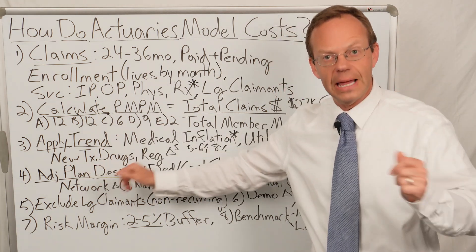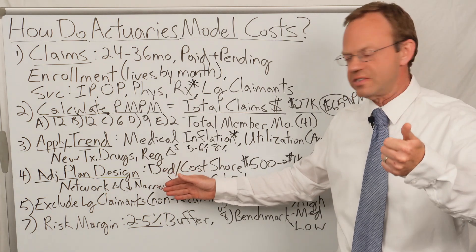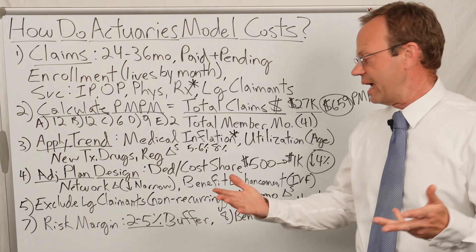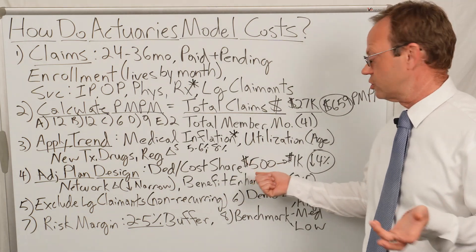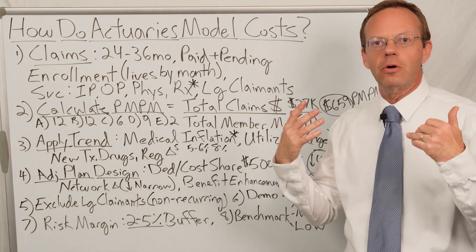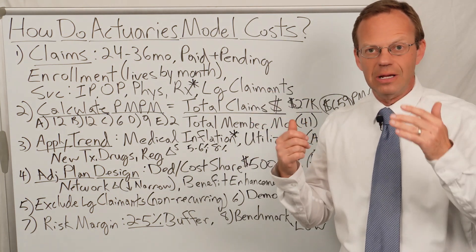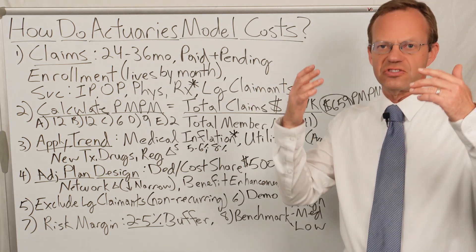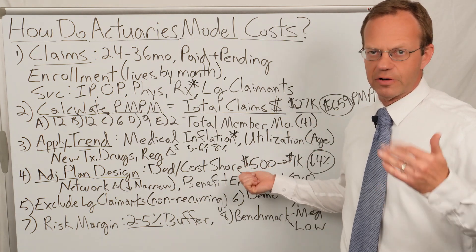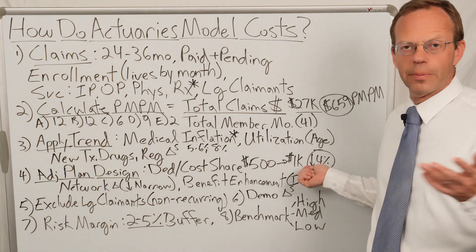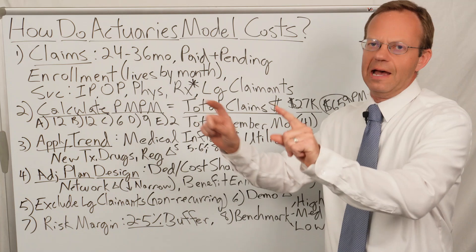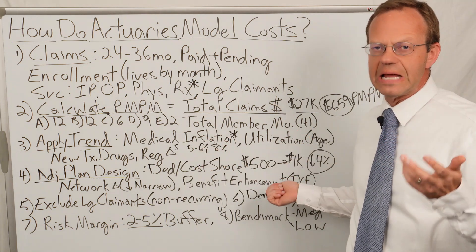Next, you adjust for plan design changes. If you increase the deductible or increase cost-sharing through higher coinsurance or a higher out-of-pocket max, that will decrease the claims costs for the plan. For example, if the deductible goes from $500 to $1,000, the actuaries — using their actuarial tables with lots of benchmarking historical data — know that should decrease the employer's overall claims cost by about 4%. No one walking down the street would know that number is 4%. That's why you hire an actuary — for that proprietary historical data.